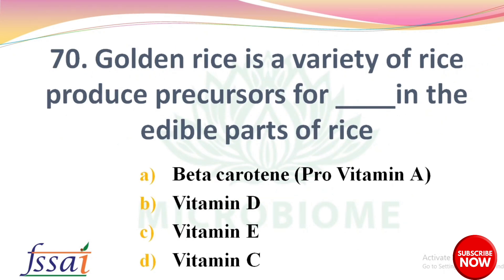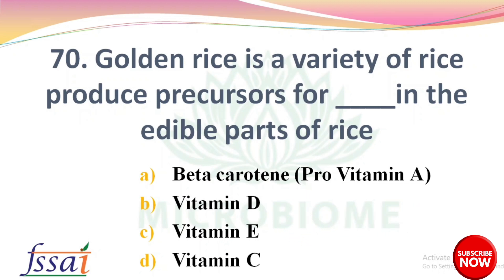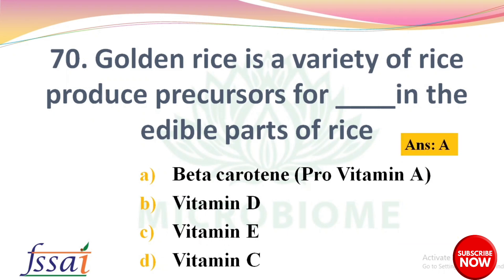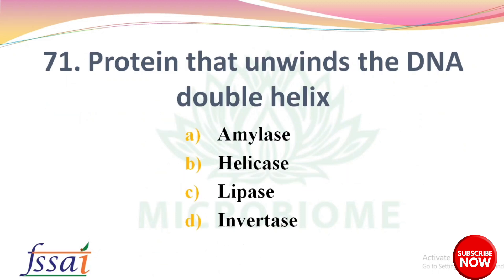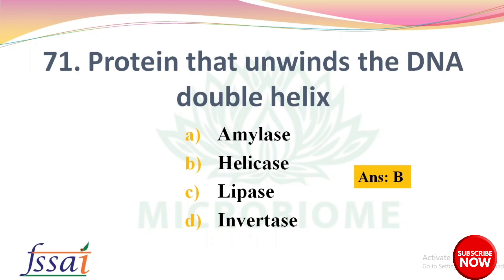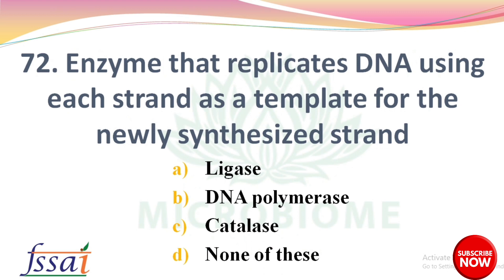Golden rice is a variety of rice that produces the precursors for — in the edible part of rice — options: beta-carotene/pro-vitamin A, vitamin D, vitamin E, vitamin C. The right answer: option A, beta-carotene/pro-vitamin A. Next: the protein that unwinds the DNA double helix — options: amylase, helicase, lipase, invertase. The right answer: option B, helicase. Next: the enzyme that replicates DNA using each strand as a template for the newly synthesized strand — options: ligase, DNA polymerase, catalase, none of these. The right answer: option B, DNA polymerase.